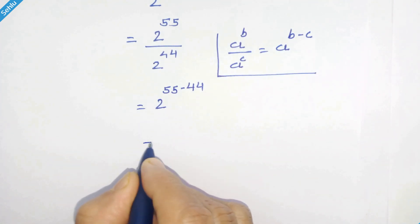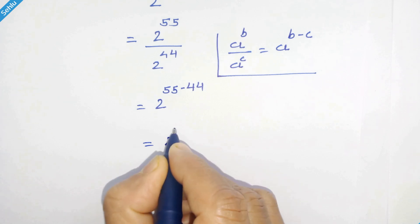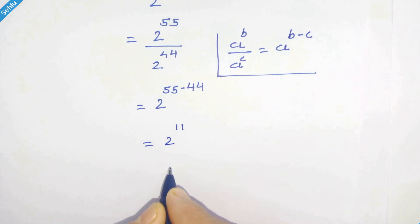55 minus 44 is 11, so we have 2 raised to 11. 11 can be written as 10 plus 1,